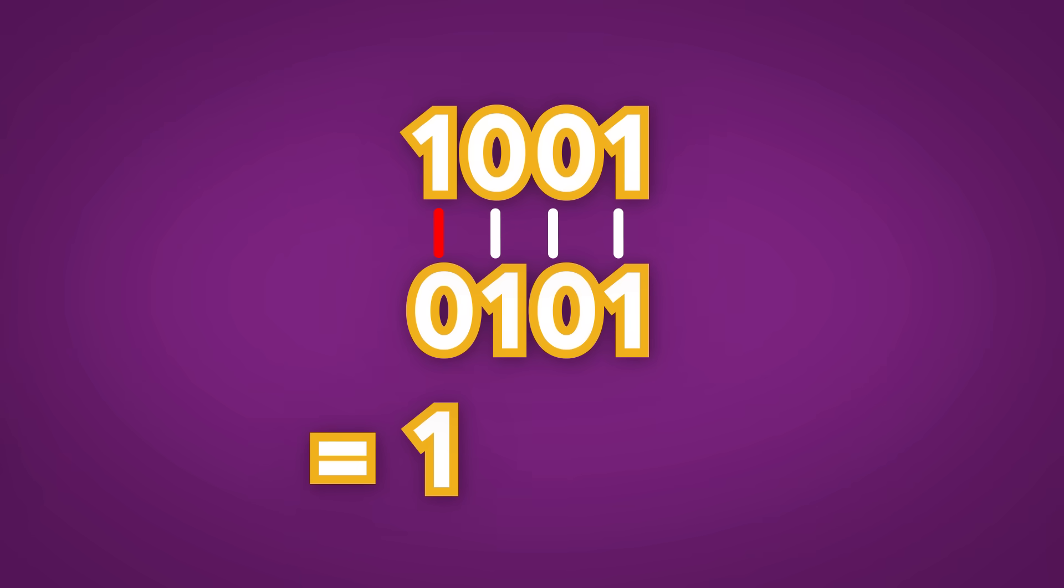If you have a 1 and a 0, you get 1. If you have a 0 and a 1, you get 1. If you have two 0s, you get 0. And if you have two 1s, you get 0.